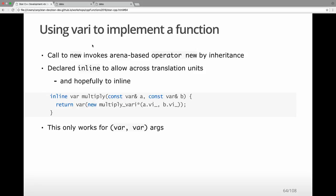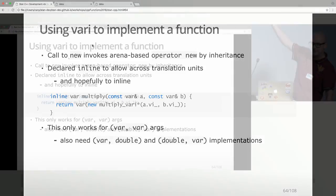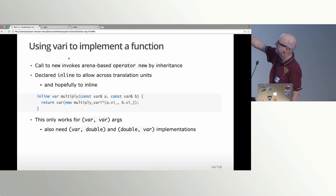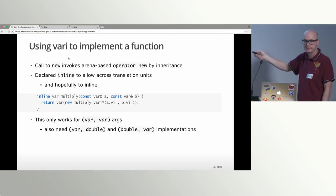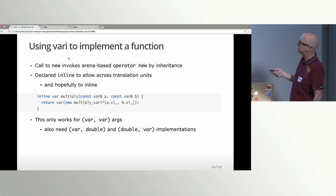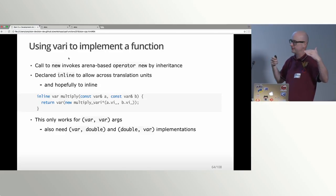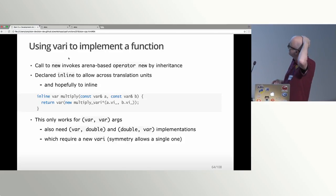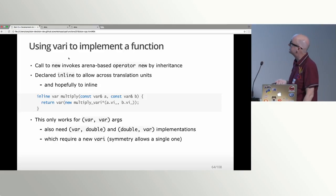The arguments have to be two vars, so this implementation only works when we multiply two parameters by each other in Stan. We'll need separate var_i implementations to deal with the var-double and double-var input cases. Those are going to look a little simpler — they only propagate one derivative. One of the operands will be a double, the other will be a var_i. The symmetry of multiplication means we only need one extra var_i for those two cases.